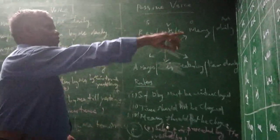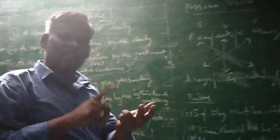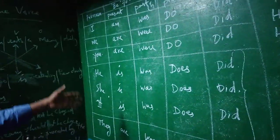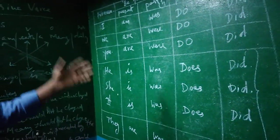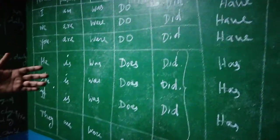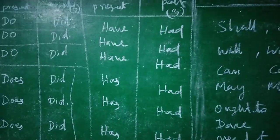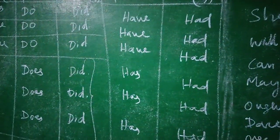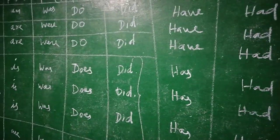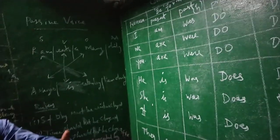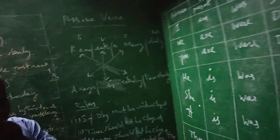One more thing we have to keep in mind about the B-form verb. B-form verb: am, is, are — present tense; was, were — past tense. Do-form verb: do, does, did. Have-form verb: have, has, had. And modals: shall, should, will, would, can, could, may, might, ought to, dare, used to, have to, need to. That is the helping verb. The main verb has V1, V2, V3 forms.